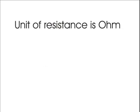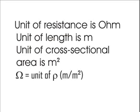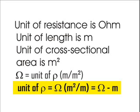Now, the unit of resistance is Ohm, the unit of length is meter, and the unit of cross-sectional area is meter square. Hence, Ohm equals unit of ρ times meter divided by meter square, or unit of ρ equals Ohm times meter square divided by meter, which gives Ohm·meter. This is the basic definition of resistivity which comes from the basic law of resistance.